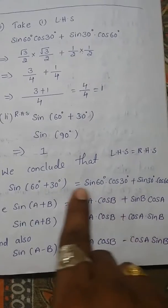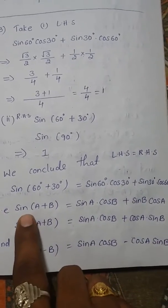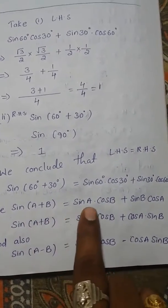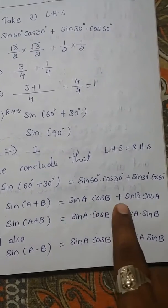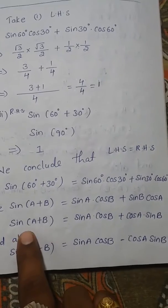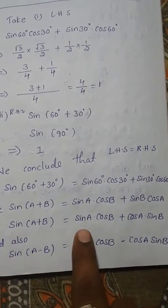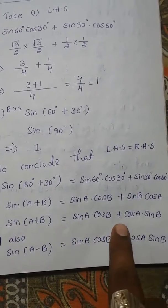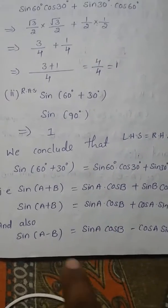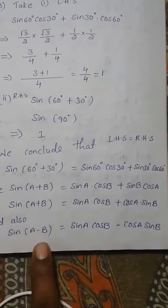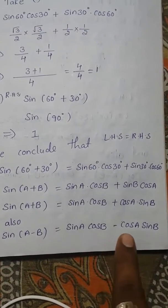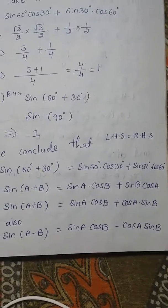From this we derive the general formula: sin(A+B) = sinA·cosB + cosA·sinB. We also have the formula sin(A−B) = sinA·cosB − cosA·sinB.